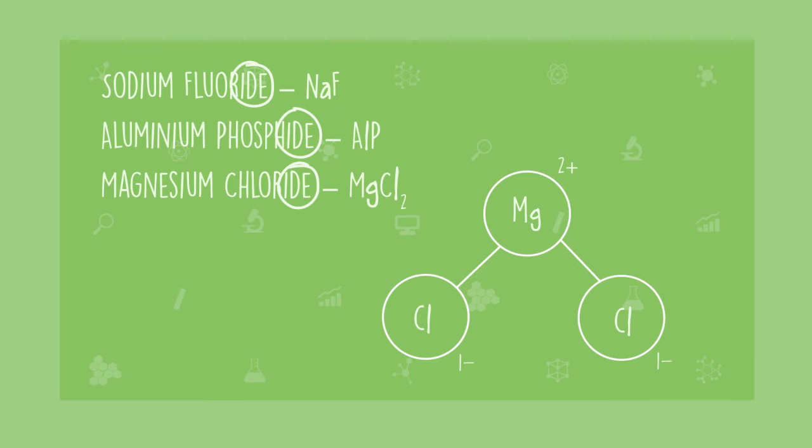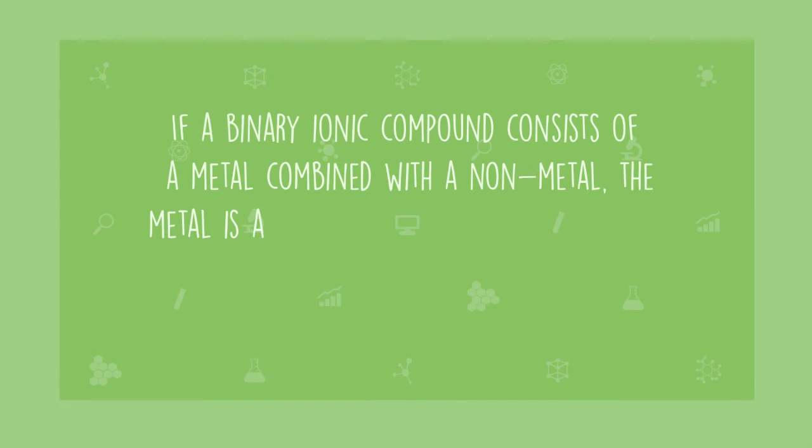Here's a rule to remember about binary ionic compounds. If a binary ionic compound consists of a metal combined with a non-metal, the metal is always named first. The non-metal is named second, and the ending of its name is changed to -ide.